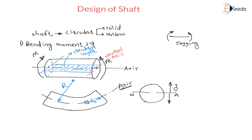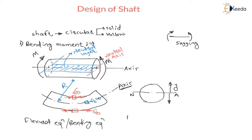For sagging bending, if I consider an element on the upper fiber, that element is subjected to compression as the upper fiber length is decreasing. For the lower fiber, as the length is increasing, the element is subjected to tension — that is tensile bending stress sigma B. The flexural equation or bending equation is M/I = σB/Y = E/R.